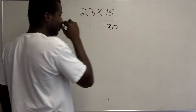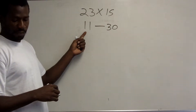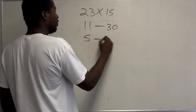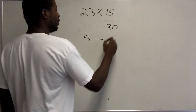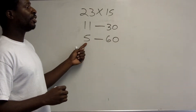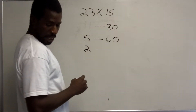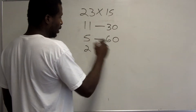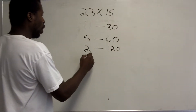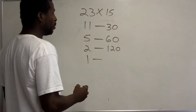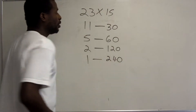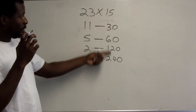Half of 11 is five and a half — we record five, and doubling 30 gives 60. Half of five is two and a half — we record two, and doubling 60 gives 120. Half of two is one, so we're done. Once the number we're halving becomes one, we stop, and the doubled side now shows 240.